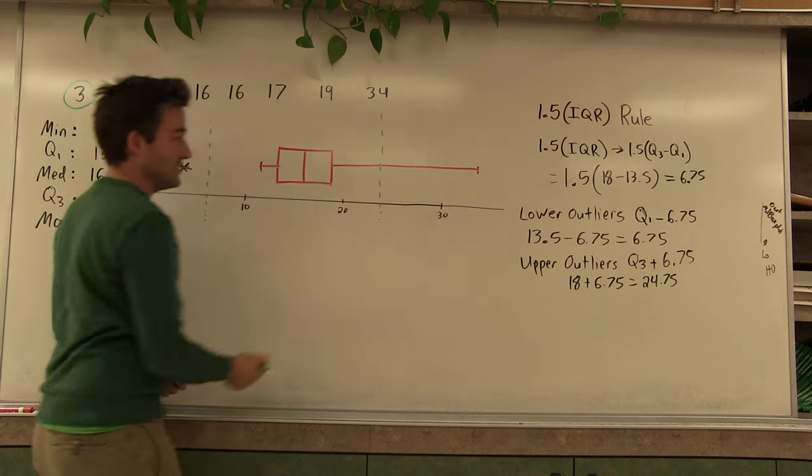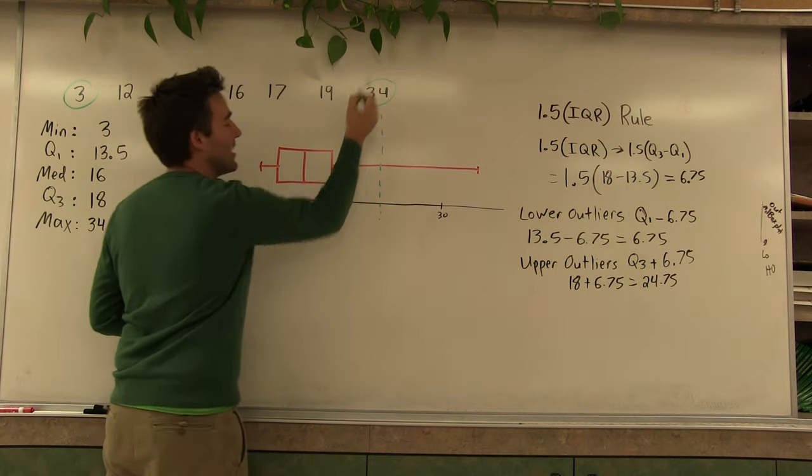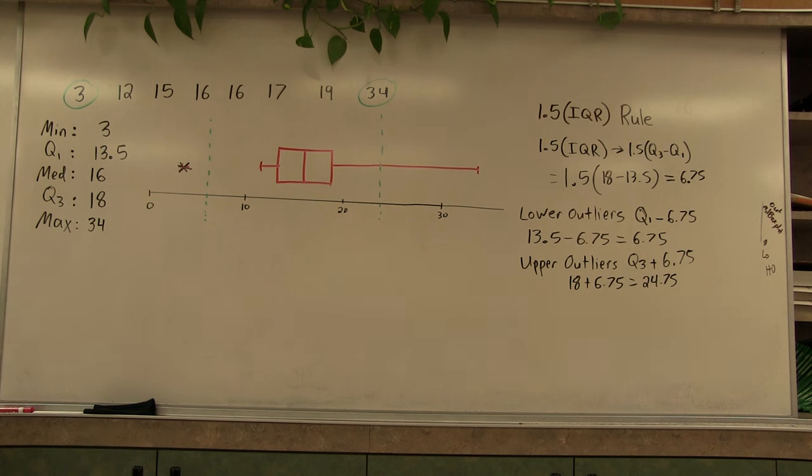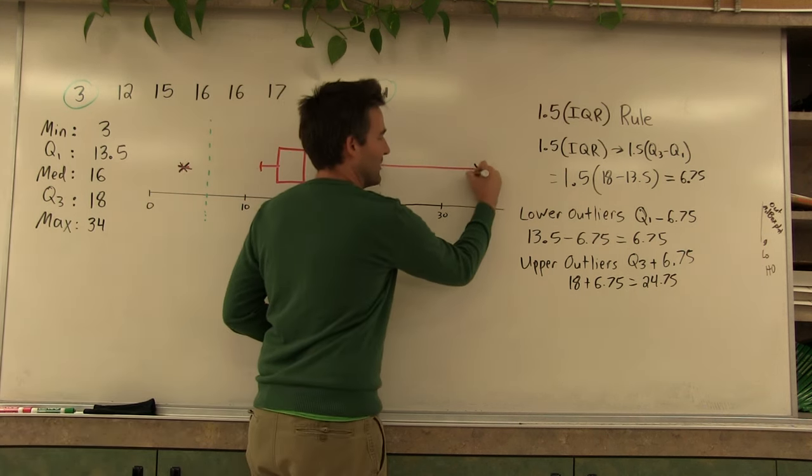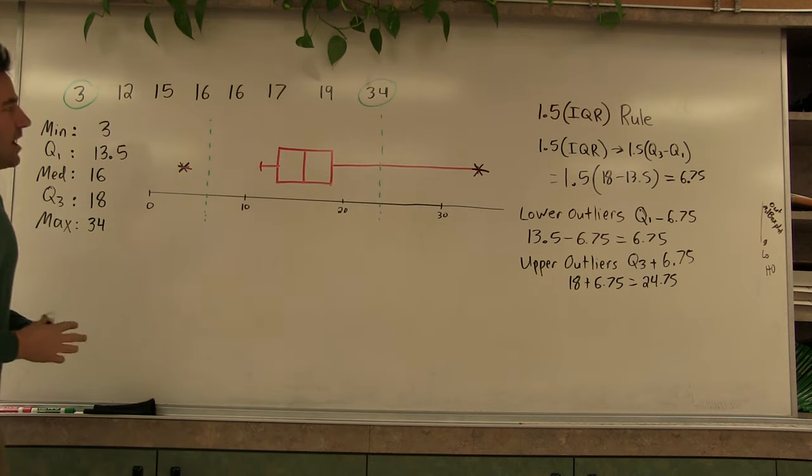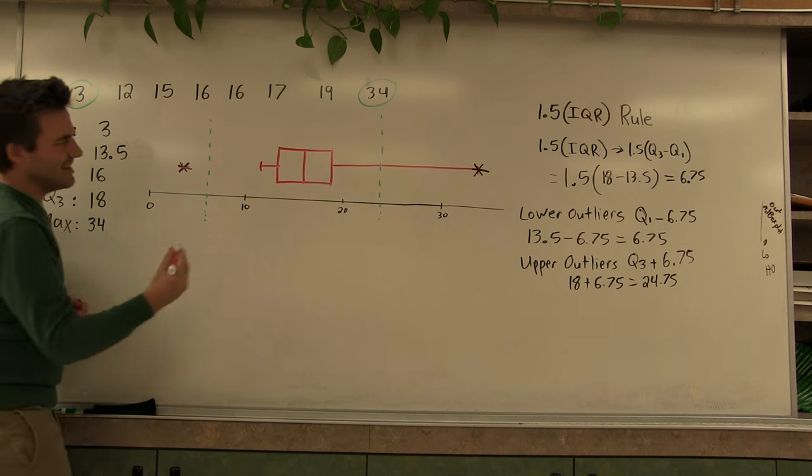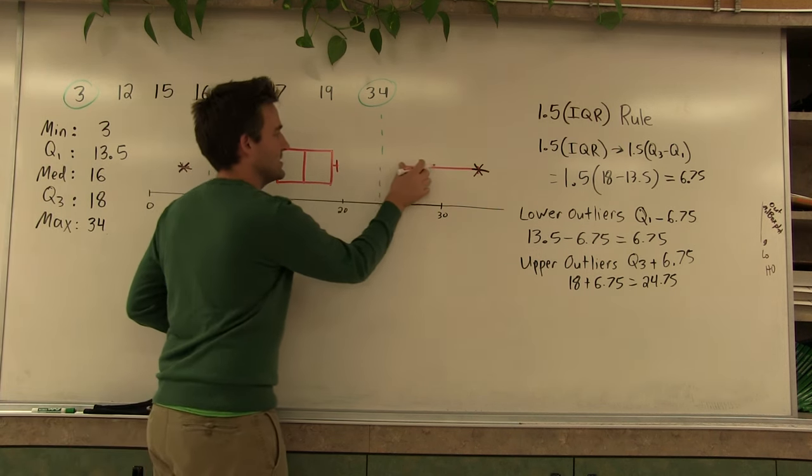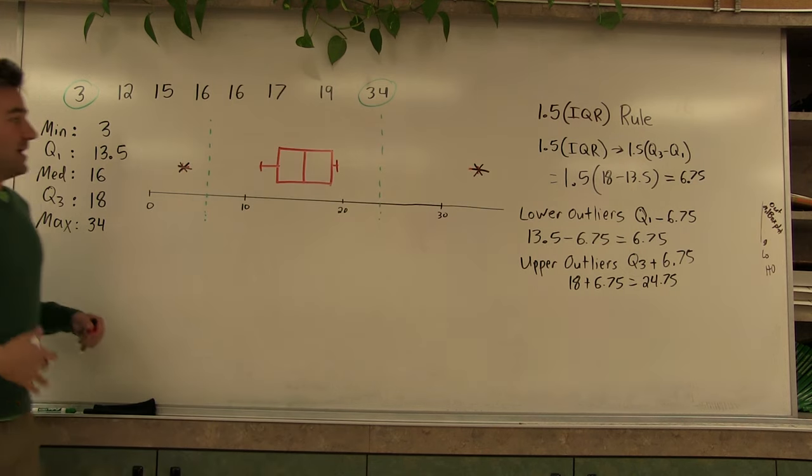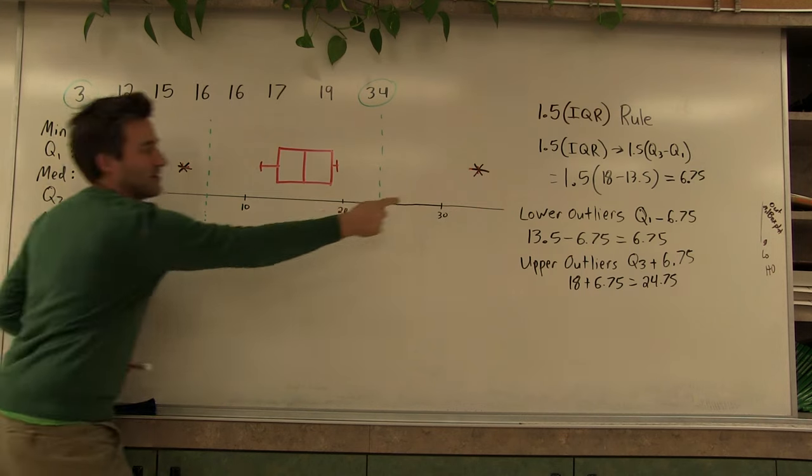And we see we do have values that exceed that boundary line. So the 34 is also an outlier. It's an upper outlier. So we need to modify the box plot again. Replace the 34 with an asterisk. Our highest value that's not an outlier is this 19. And erase the whisker. And now we have a modified box plot where we have outliers clearly identified.